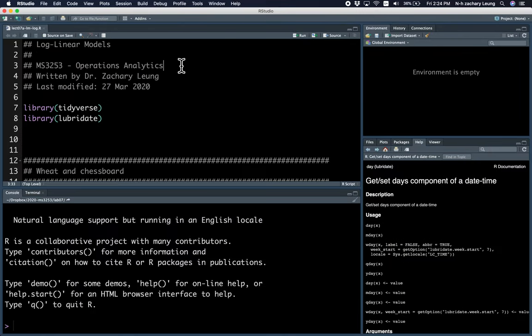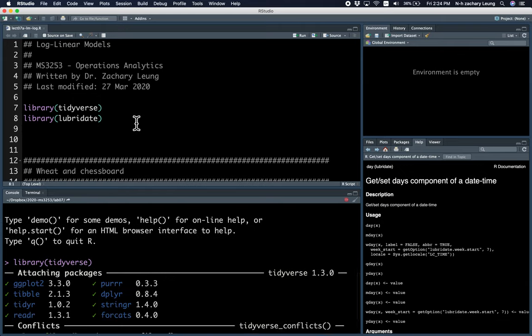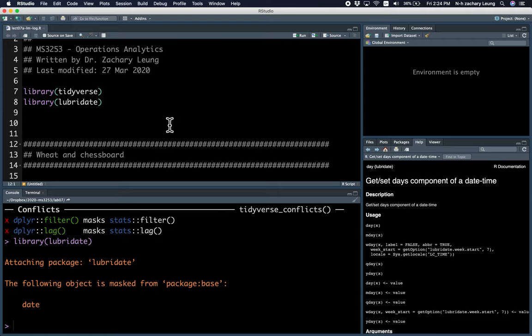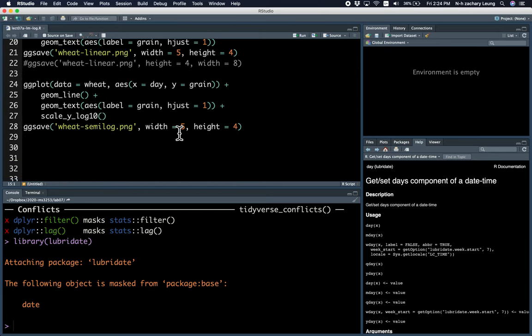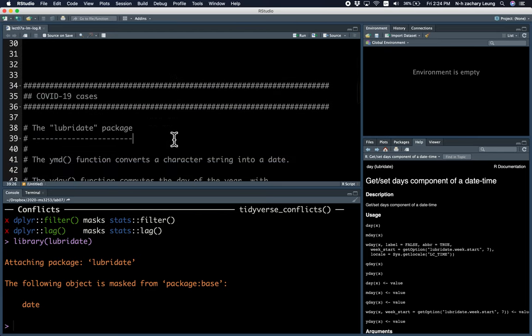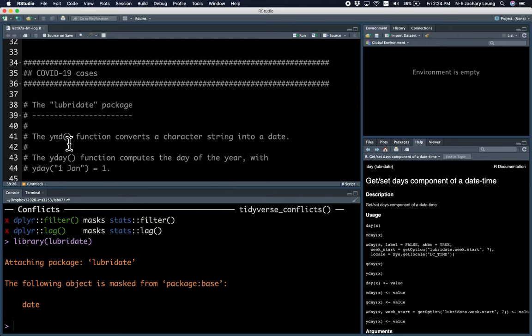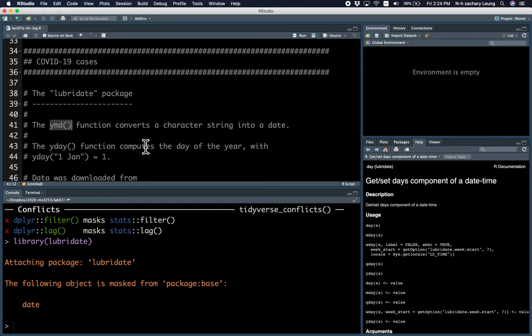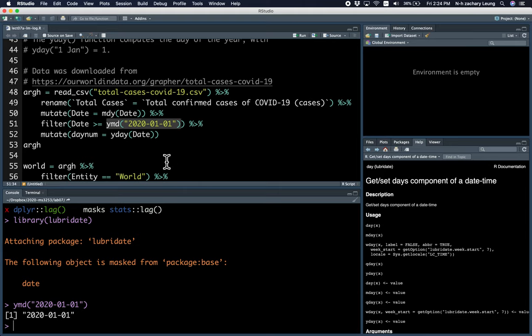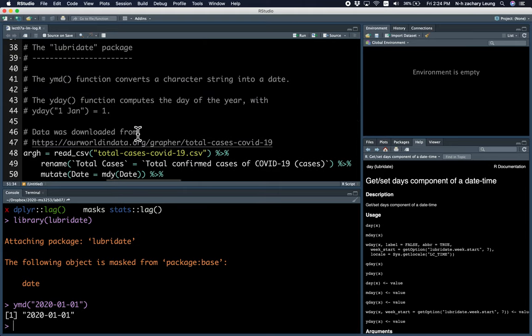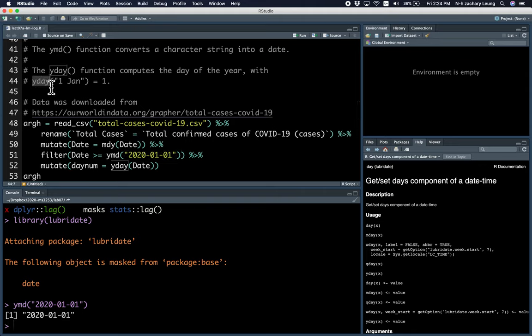So we'll also be loading a package called lubridate, which helps us to manage dates more easily. This code is just for drawing the graphs. I don't think you really need to know about this. The lubridate package, there are two functions that I'm using. This function ymd basically converts a character string into a date. So for example, it converts this character string into the dates January 1st. And this function yday computes the day of the year, with the first gen basically being 1.